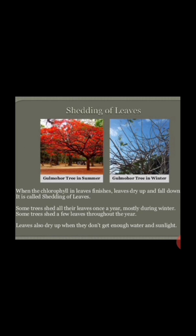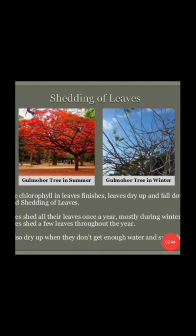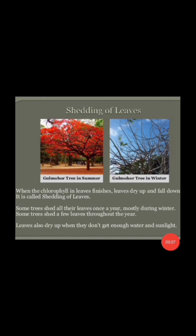So why do plants shed their leaves? Basically, when the chlorophyll in the leaves finishes, the leaves dry up and fall down — this is called the shedding of leaves. You can see in the picture the gulmohar tree in summer and in winter. In summer it has red colour leaves, and in winter there are no leaves. In India, most plants shed their leaves in the autumn season. Some plants shed their leaves once a year, mostly during winter. Some trees shed a few leaves throughout the year. Leaves also dry up when they don't get enough water and sunlight.